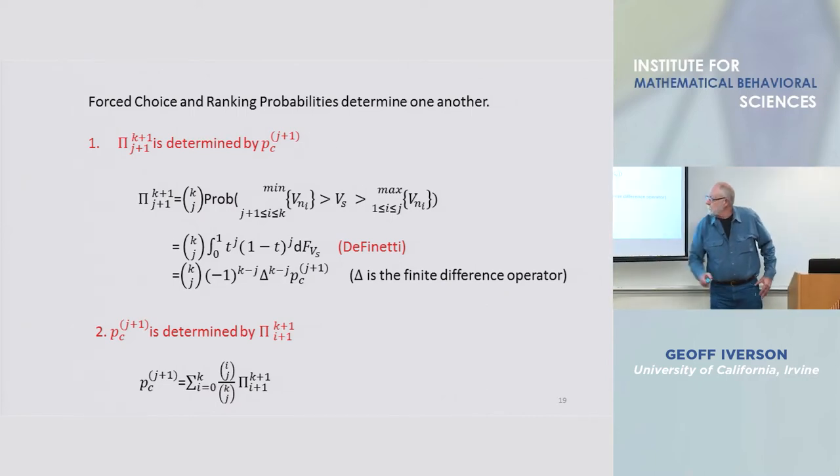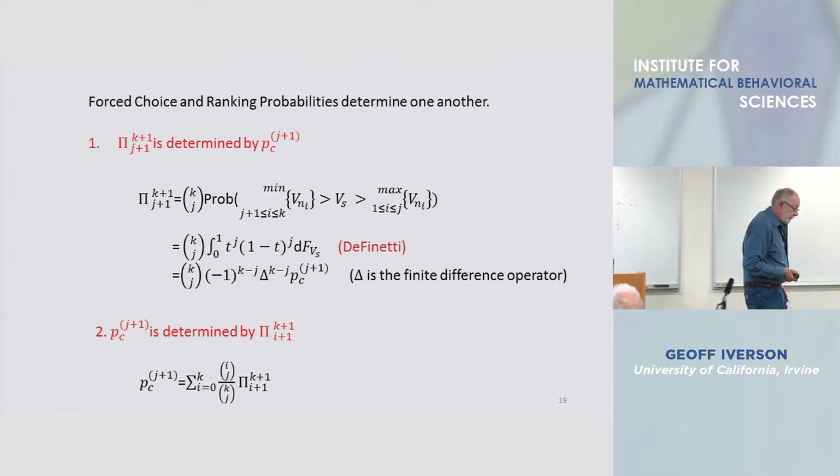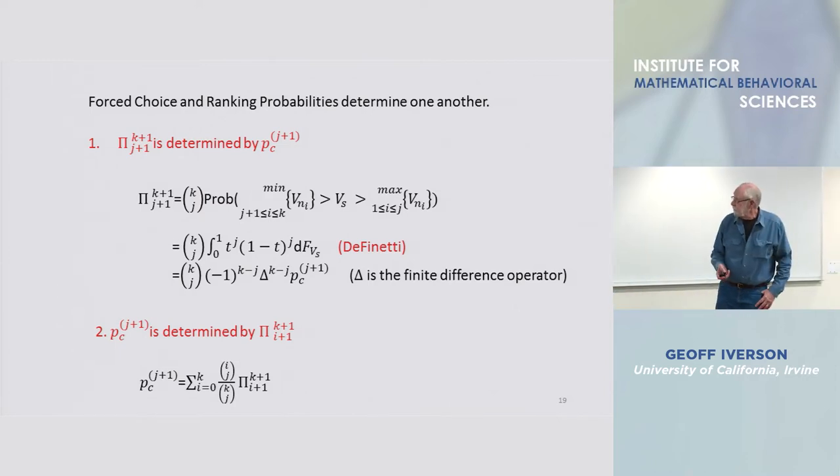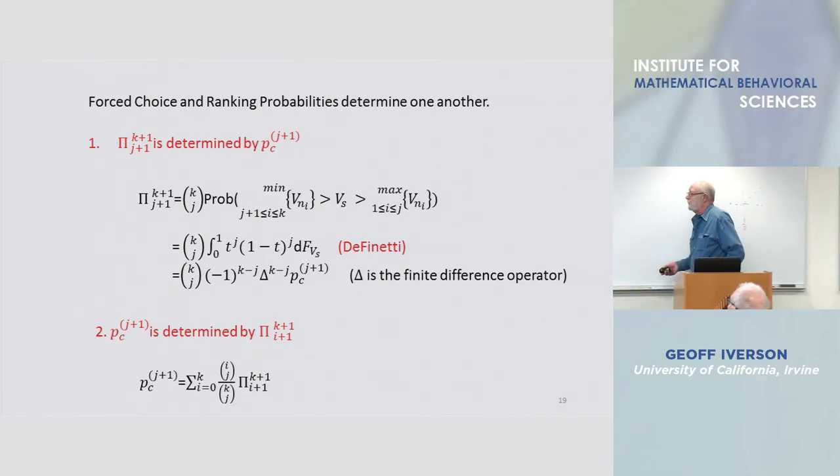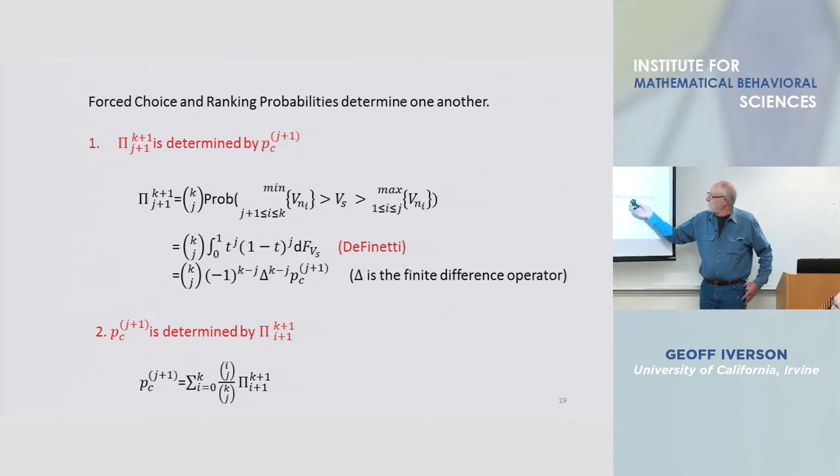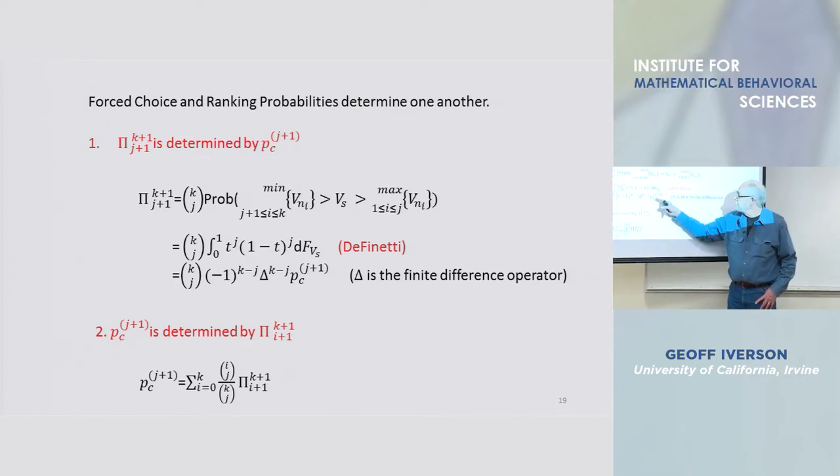It's very convenient to introduce the finite difference operator delta and to use that to rewrite the line just above. So given the forced choice data, everything here is determined and you can reconstruct the ranking data.